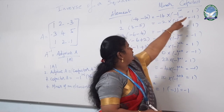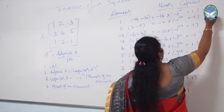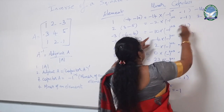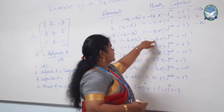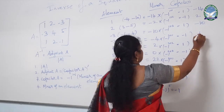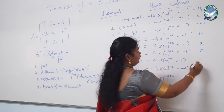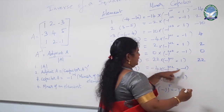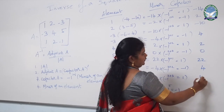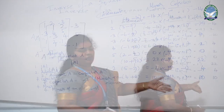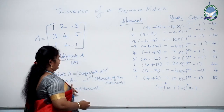Now multiply each minor by its corresponding sign. Minus 14 times 1 is minus 14; 2 times minus 1 is minus 2 — wait, the cofactor values come out as: minus 14, plus 2, minus 10, plus 4, plus 2, 0, plus 22, plus 4, plus 10. These are the completed cofactors. We have now finished calculating the minors and cofactors.